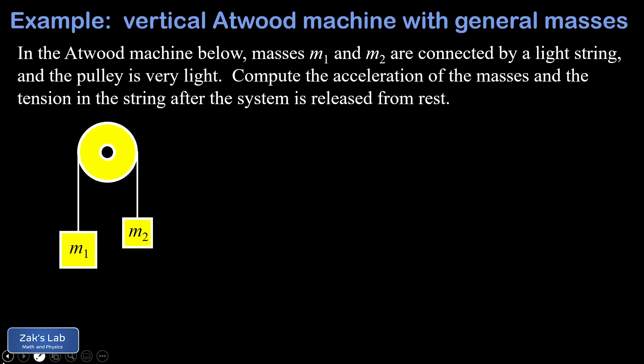We're using two common approximations here. The first is that the string is very light and the second is that the pulley is very light. This means we don't have to worry about the weight of the string itself or the inertia of the pulley, and the tension exerted by that string is going to be exactly the same at each end.